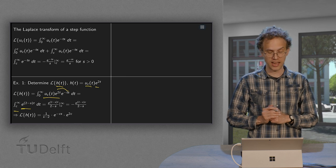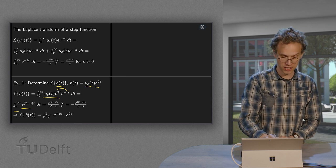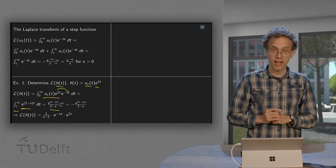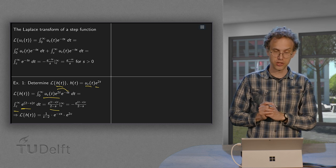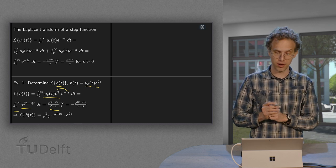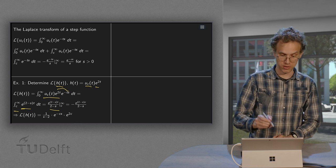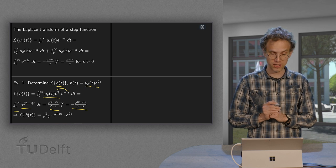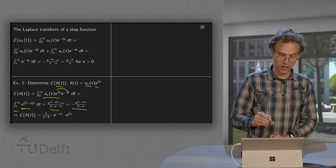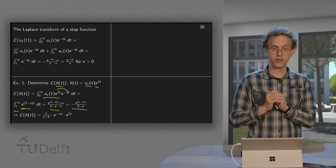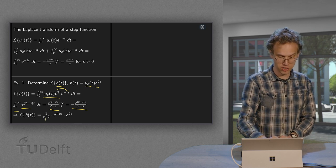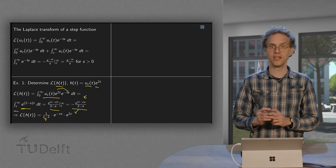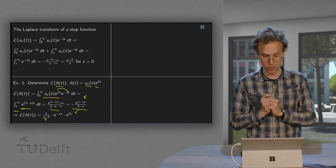We find the antiderivative: 1 over (2 minus s) times the exponential, evaluated between the boundaries. If s is greater than 2, the upper boundary drops out, and we are left with only the lower boundary contribution, which we can rewrite: minus 1 over (2 minus s) equals 1 over (s minus 2), times e to the power minus sc, times e to the power 2c.